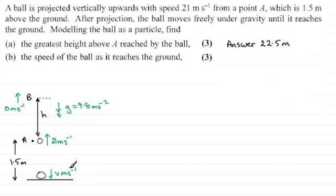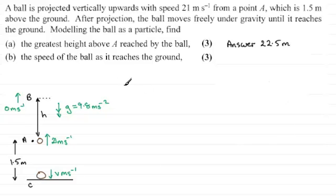Since we've got H here, one of the quickest ways will be to consider the motion from the top, B, to the bottom. Let's label that as C. So we consider the motion B to C.